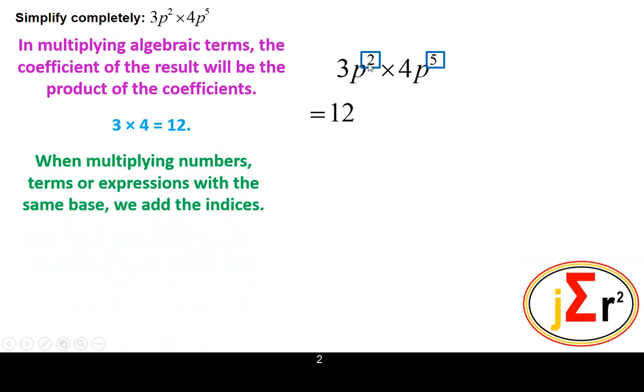So we have the indices here, 2 and 5. Since we are multiplying and the bases are the same, we may go straight ahead and add the indices. Take note that the base of the result will be the same.